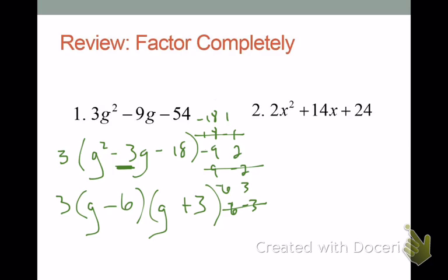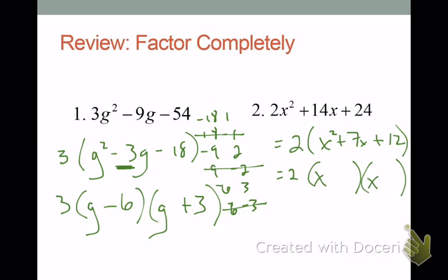Try the second one. Again, we factor out a 2 for a GCF, then create two sets of parentheses and factor the first term into x and x. We need factor pairs of 12: 12 and 1, 6 and 2, 4 and 3. They're going to have to add to positive 7, and two negative numbers can't add to a positive number, so we only consider the positives. The factor pair that adds to 7 is clearly 4 and 3. Put those in and we're done.